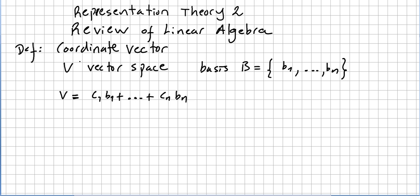Let's start with the concept of coordinate vector. We have V, a vector space, and we pick a basis that we call B. This basis is the set containing vectors b₁, b₂, ..., bₙ. Any vector v in the vector space